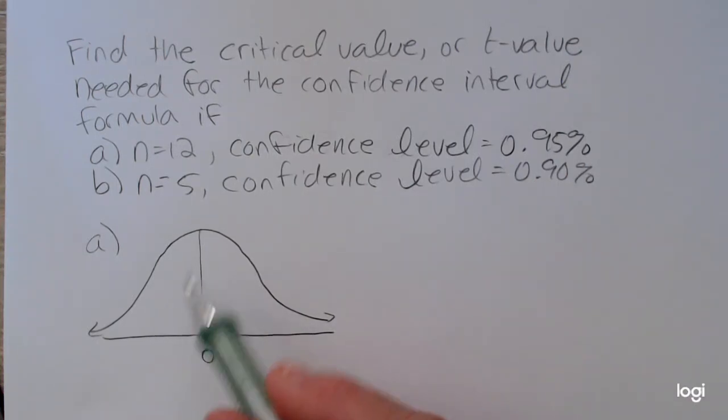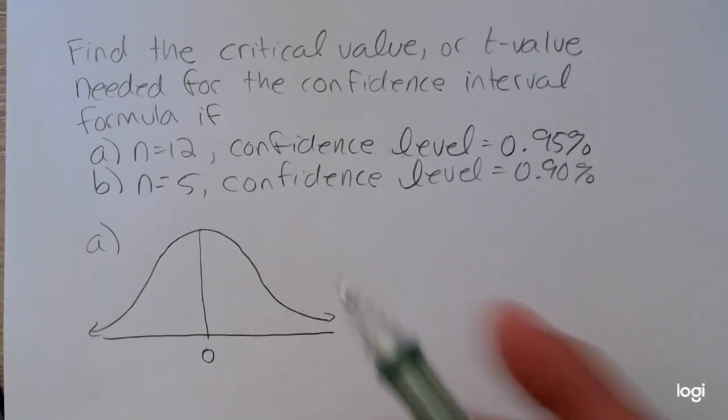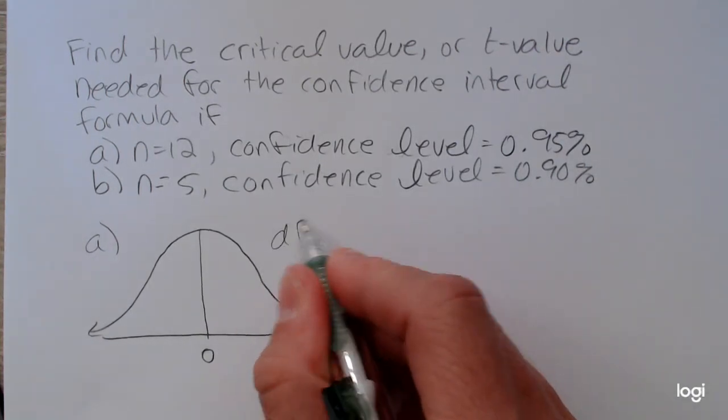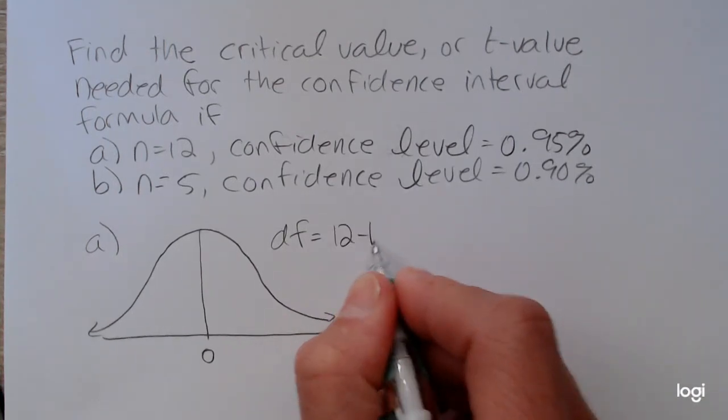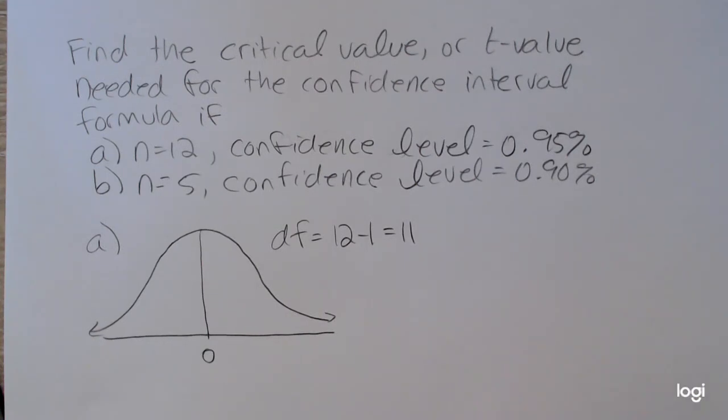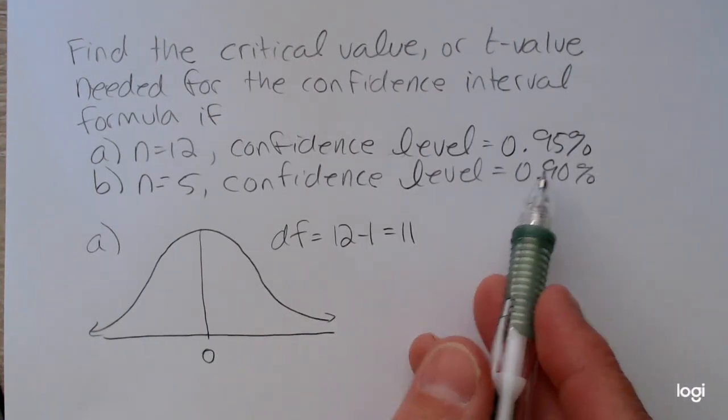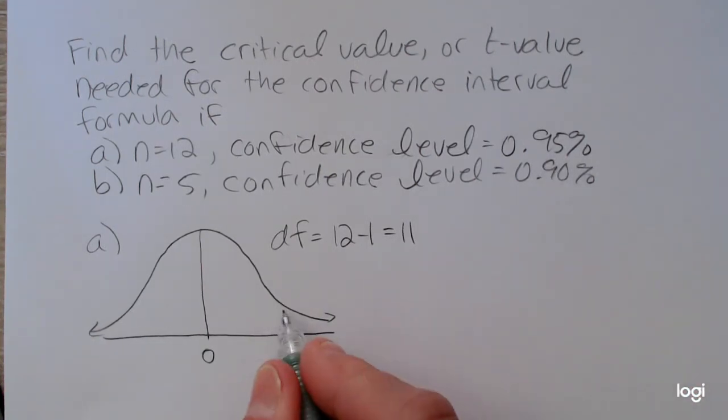So I have a bell-shaped distribution. I put zero in the middle. If n is equal to 12, then my degrees of freedom is n minus 1, or 12 minus 1, which is 11.